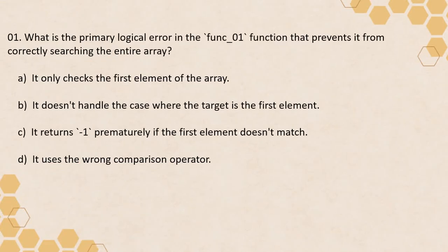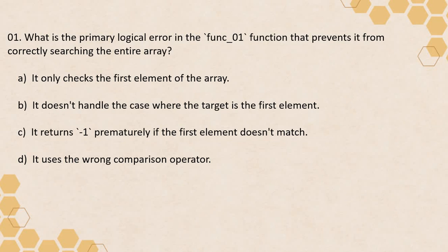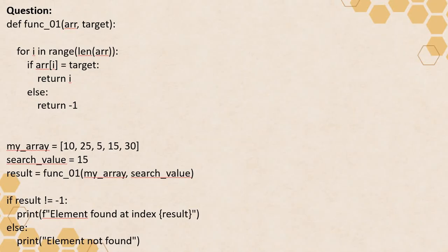You will go through all four options. The question asks: what is the primary logical error in function_01 that prevents it from correctly searching the entire array? The options are: it only checks the first element of the array; it doesn't handle the case where the target is the first element; it returns minus one prematurely if the first element doesn't match; or it uses the wrong comparison operator. There can be multiple things that are correct, so you have to find the optimal answer or multiple correct options. Pause the video, understand the code, and put your answers in the comments.